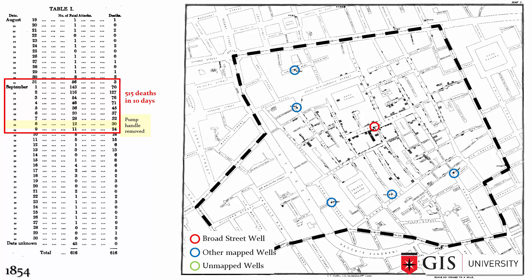He could see there were some anomalies in his map, so he did a detailed investigation of 83 deaths that occurred over a three-day period. Ultimately, John Snow was able to convince local officials that the Broad Street pump was the source of the infection. They removed the pump handle and the outbreak ceased. However, he could not have reached this conclusion based on a mapping exercise alone.